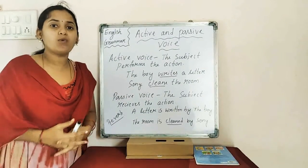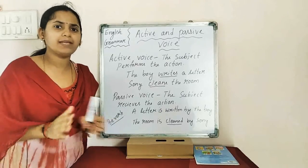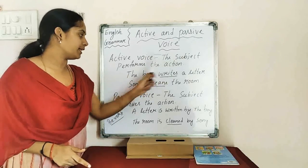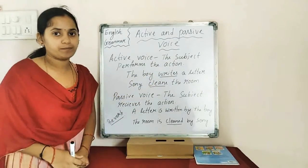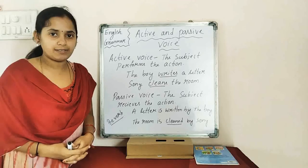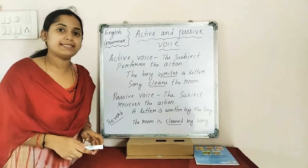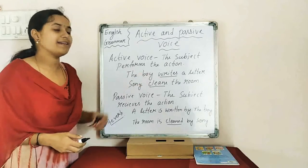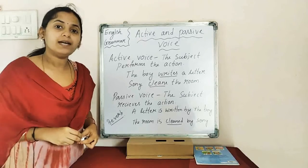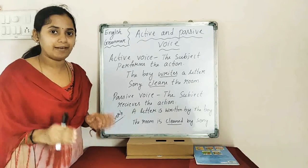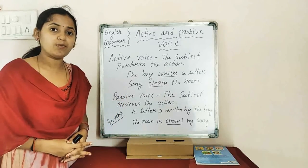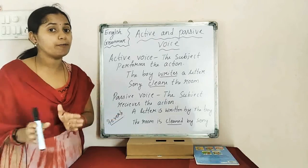The first one is active voice. Active voice means — the name itself says that something is actively going on. Here in this voice, the subject performs the action. The subject actively performs the action. That type of sentence is called active voice. Here the subject is active, meaning we are giving more importance to the subject.